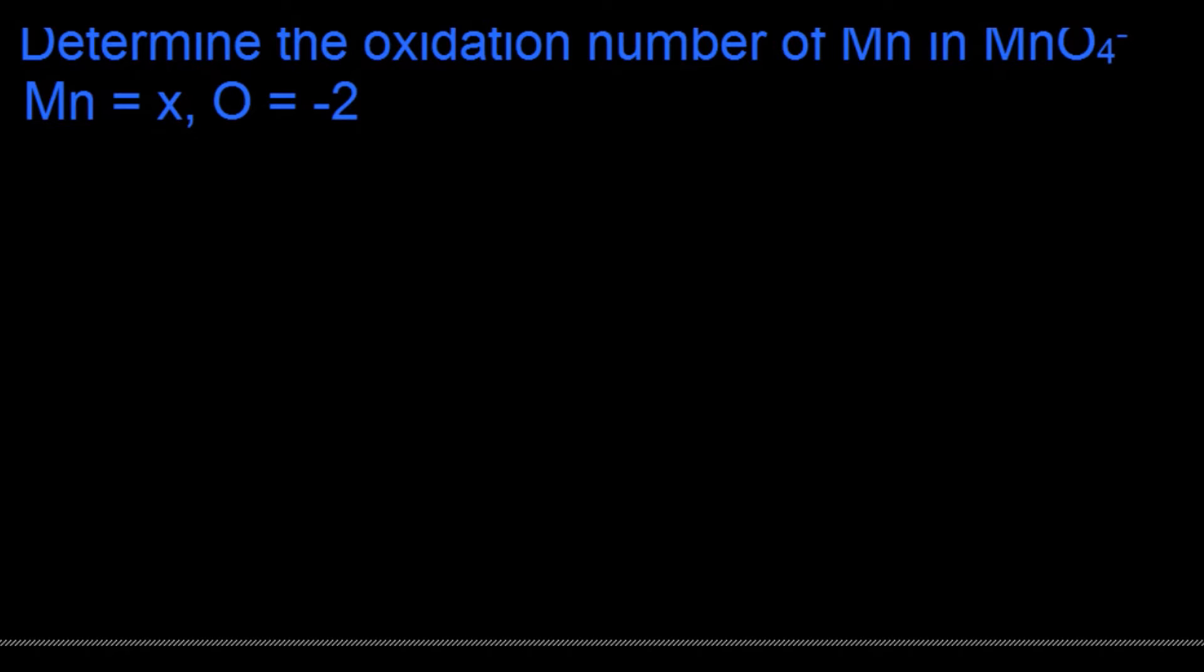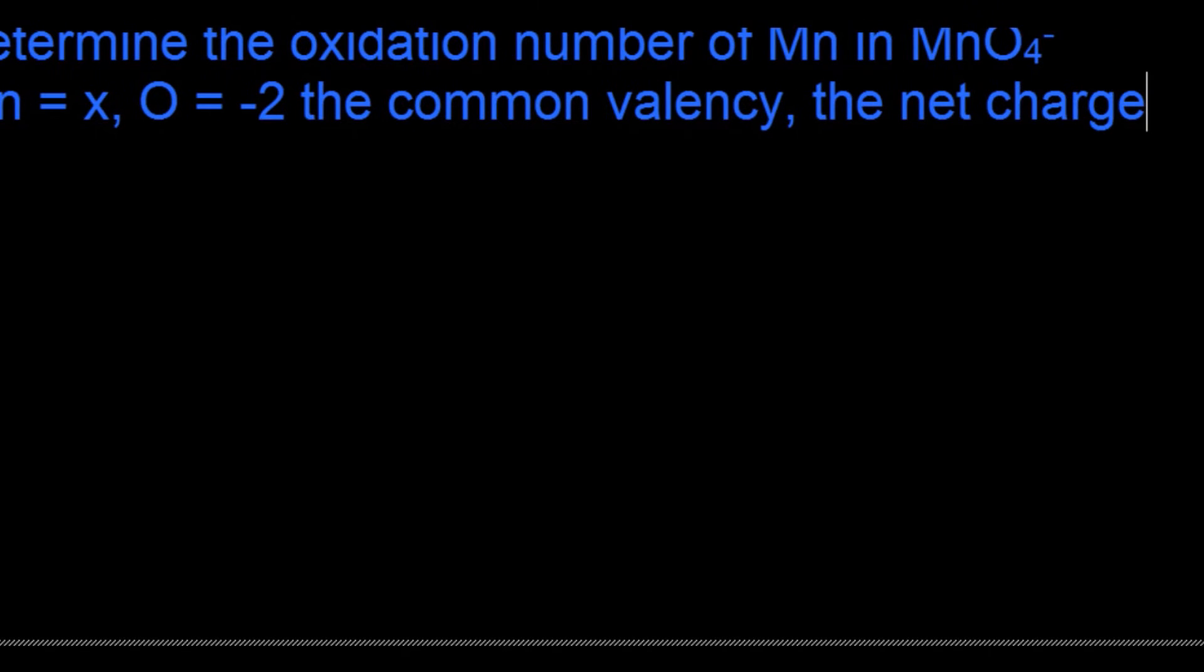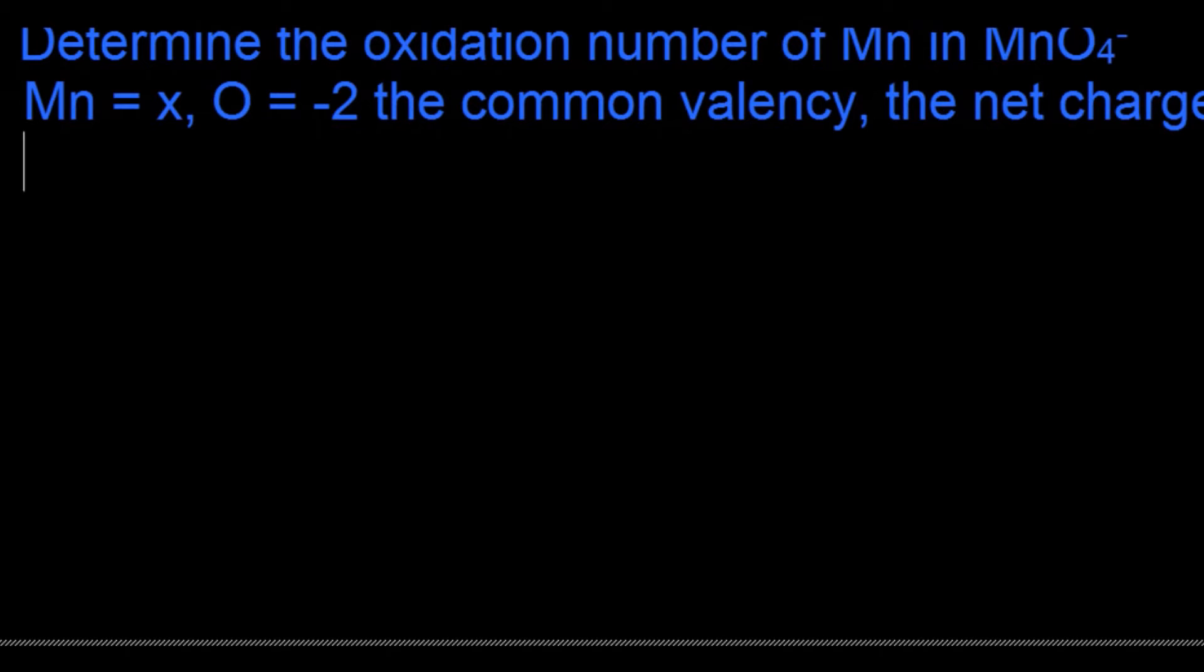Manganese is assigned an oxidation number of X. Oxygen is assigned the oxidation number of -2, the common valency. The total charge of the manganate ion is -1, so X + 4 × (-2) = -1 is the total charge of the manganate ion.